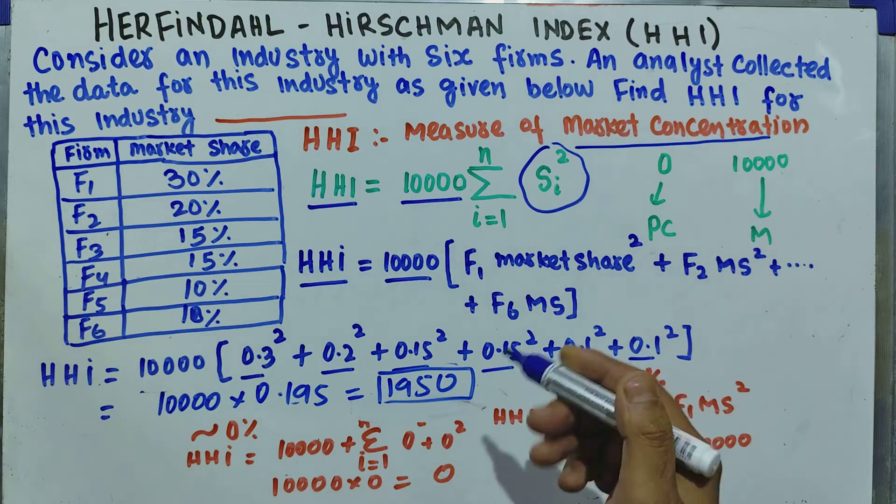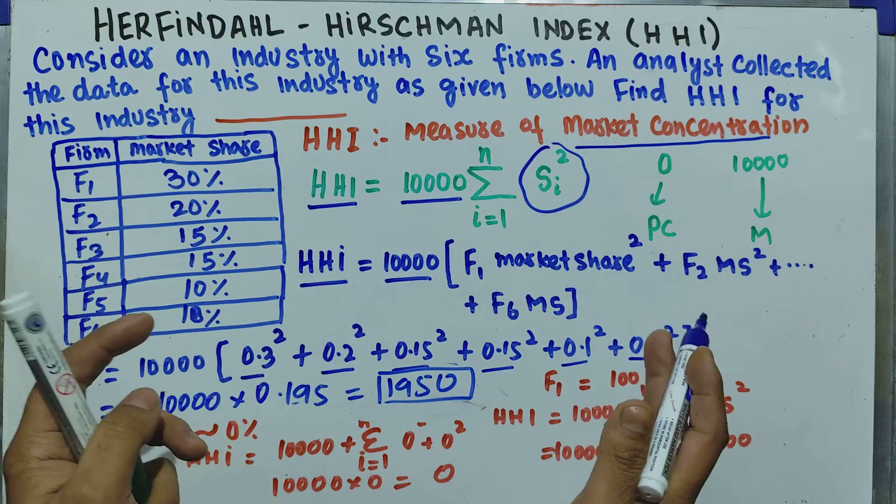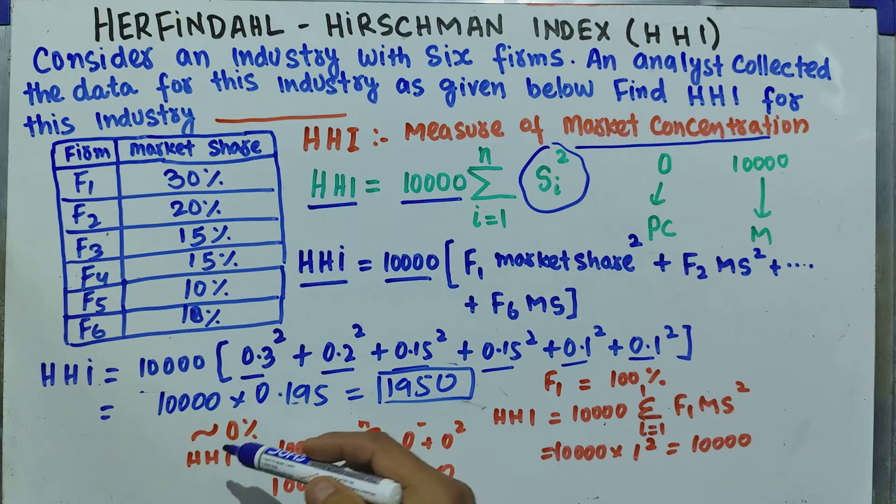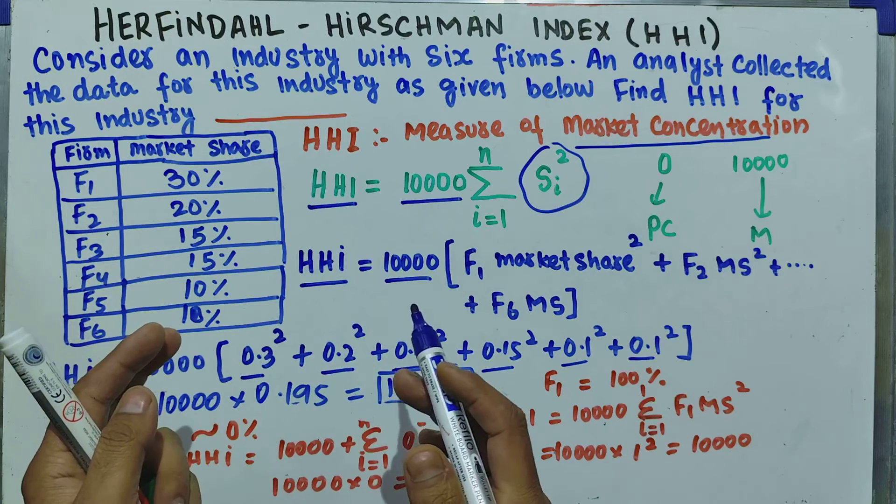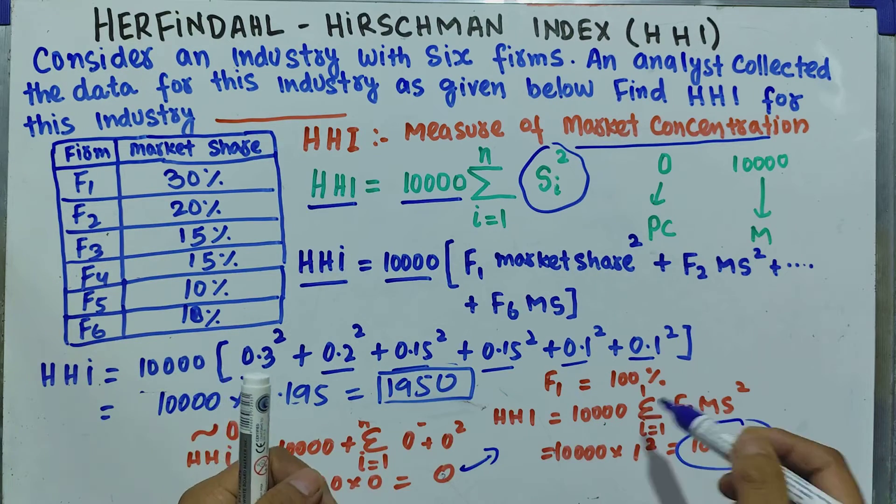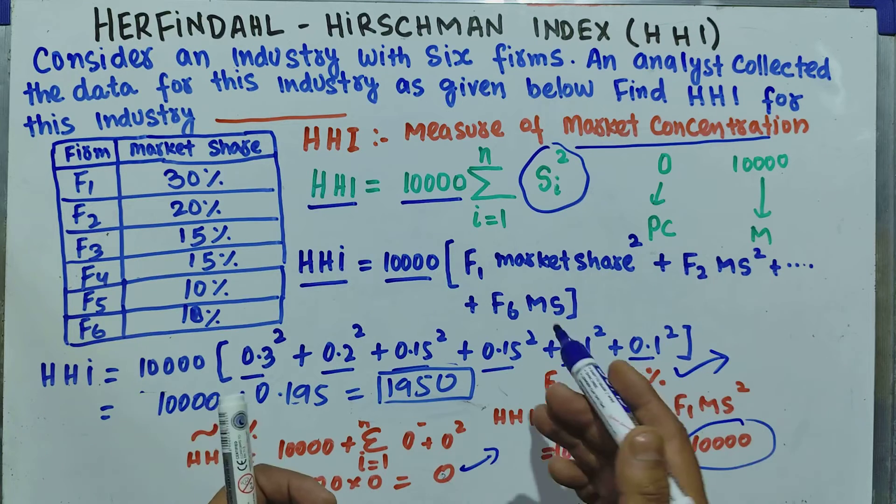How do we interpret it? Its value lies between 0 and 10,000. If the value of HHI comes out to be 0, we have a case of perfect competition. If its value comes out to be 10,000, we have only one firm in this case.